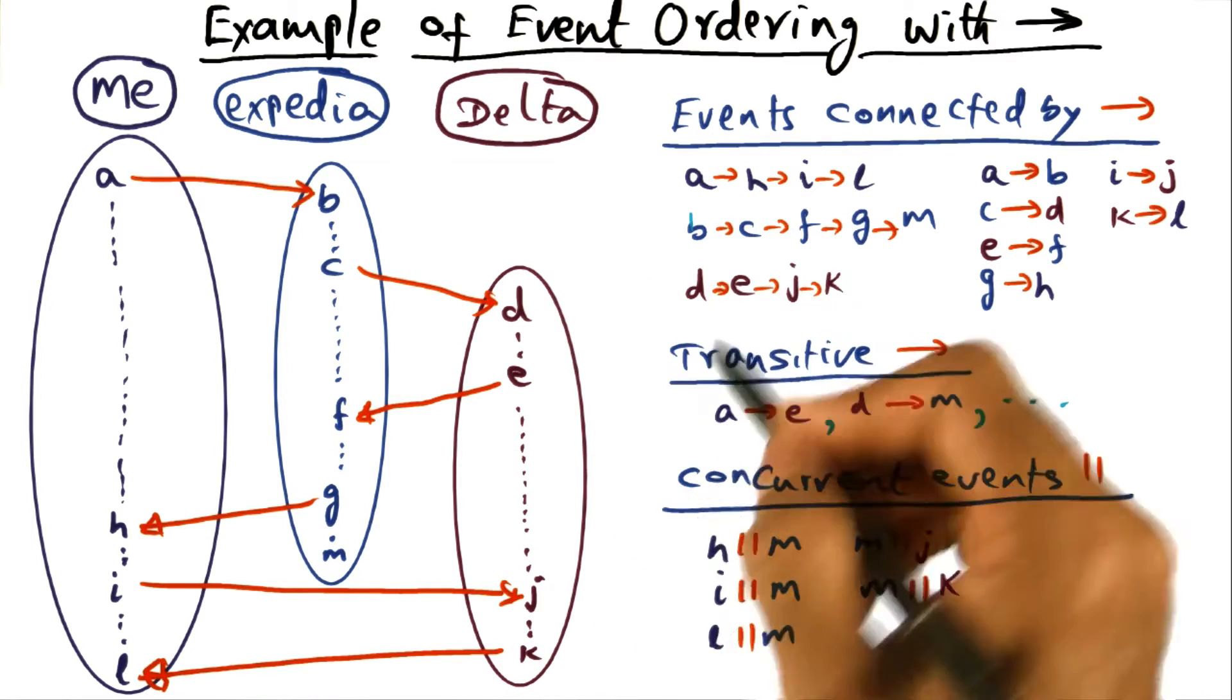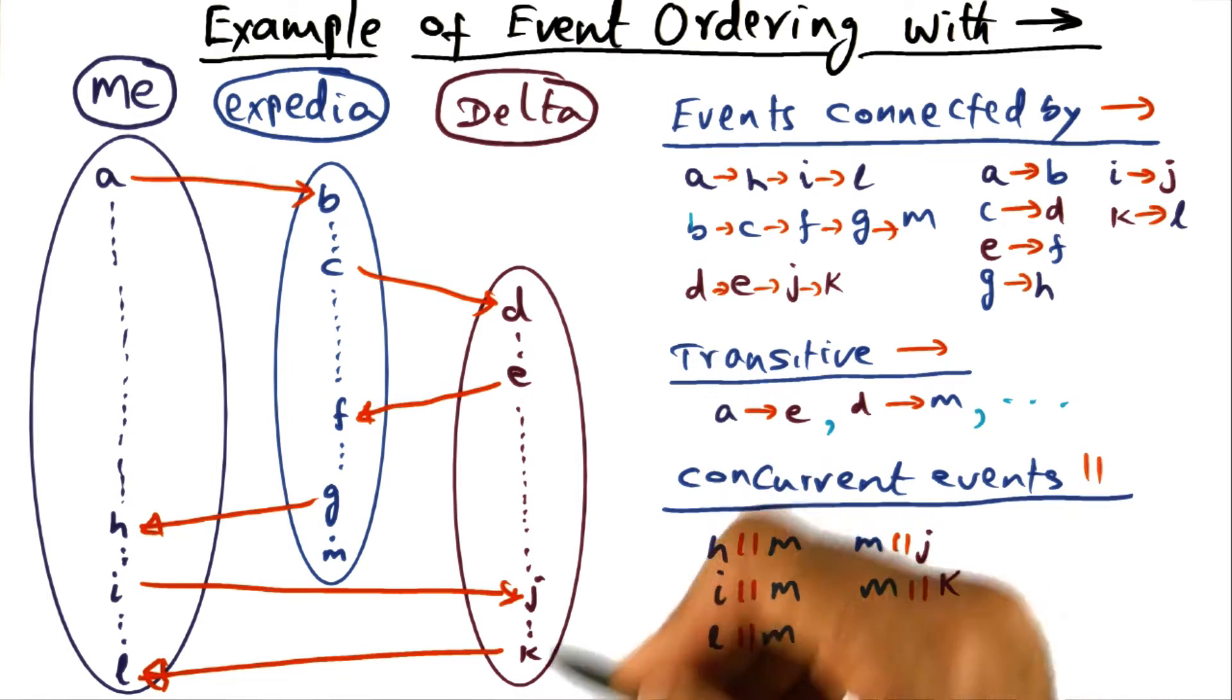And similarly, we can derive the order of events in the Delta process as sequential.